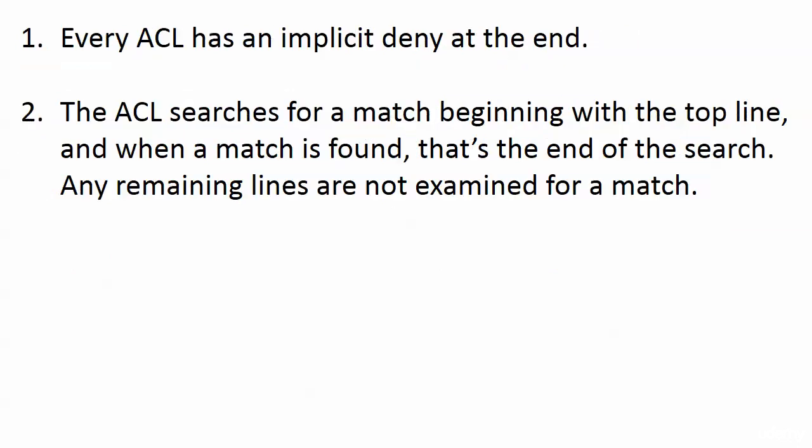Beginning with the two biggest rules of the ACL jungle: the first one is that every ACL has what we call an implicit deny at the end — or at the bottom — of it. Because our ACL is going to be a set of lines, it always has a top and a bottom, and at the bottom there's that implicit deny. More about that in a moment.